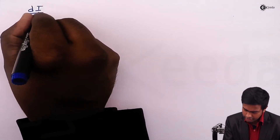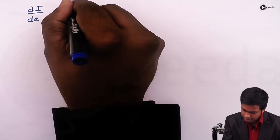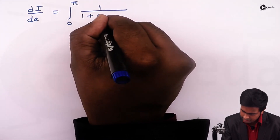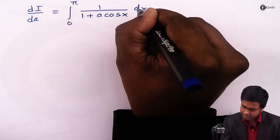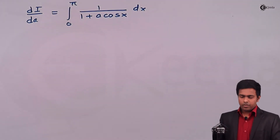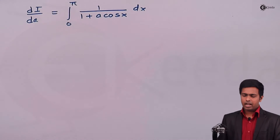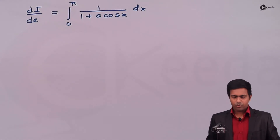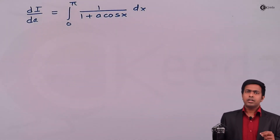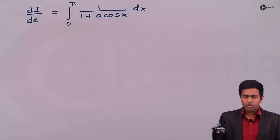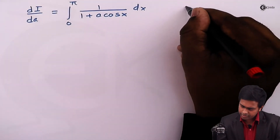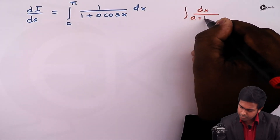After cancellation, we get dI/da equal to the integral from 0 to π of 1/(1 + a·cos x) dx. Now we need to solve this integral and apply the lower and upper limits. To solve this type of integral, we use the method you learned in 11th and 12th standard: the method for integrating dx/(a + b·cos x).